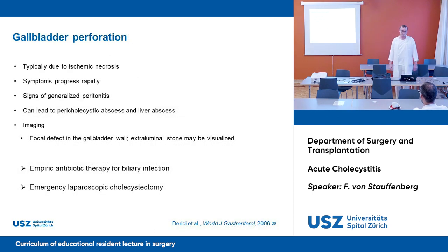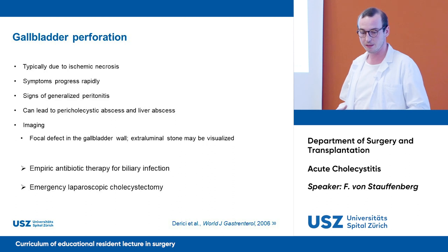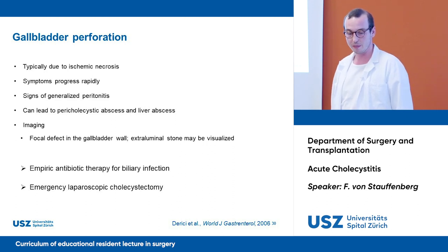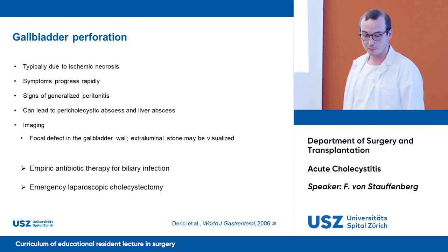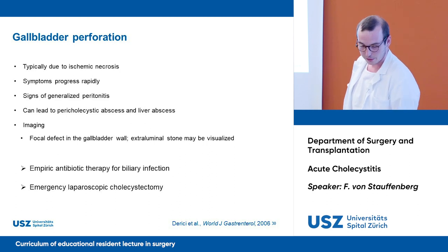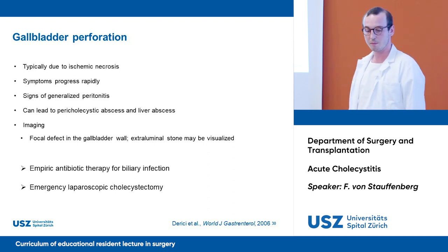Gallbladder perforation is typically due to ischemic necrosis and symptoms will progress rapidly. We will see patients with signs of generalized peritonitis, and it can lead to pericolecystic and hepatic abscesses. On imaging, we would see a focal defect in the gallbladder wall and might see an extraluminal stone. Empiric antibiotic therapy for biliary infection as well as emergency laparoscopic cholecystectomy would be the treatment of choice.